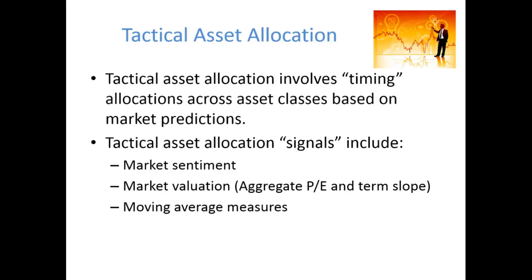People are allured to the idea of tactical asset allocation, particularly because more than 90% of variation in performance is actually explained by the asset allocation decision. So if markets are less than perfectly efficient and investors are able to predict future movements, there is huge scope to potentially outperform.